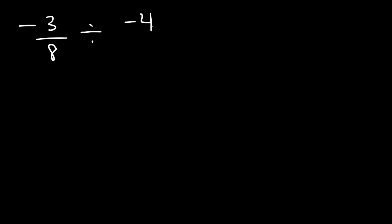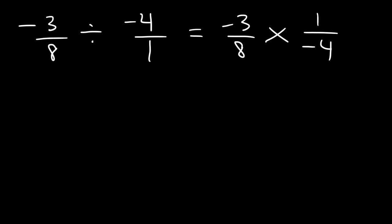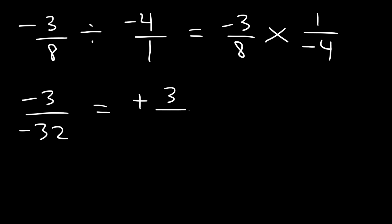Let's do one more similar example: divide negative 3 eighths by negative 4. When you divide a negative number by a negative number, you get a positive number, so the final answer should be positive. Keep the first fraction the same, change division to multiplication, and flip the second fraction. Negative 3 times 1 is negative 3, and 8 times negative 4 is negative 32. Two negatives divided by each other gives positive, so the answer is positive 3 over 32.